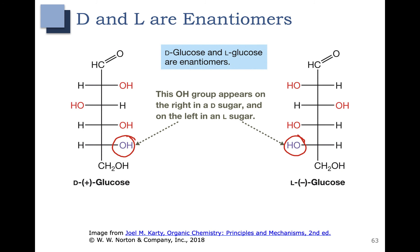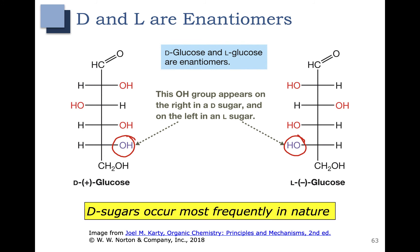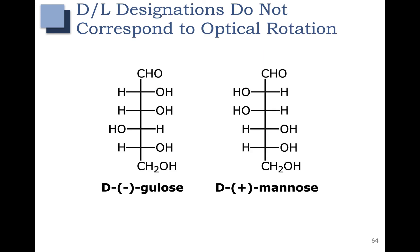Remember that (+) glucose and (−) glucose are enantiomers, so given one you should be able to draw the other. It's also important to remember that D sugars with the OH group on the right are the ones that occur most commonly in nature. Keep in mind that the D and L designations do not correspond to optical rotation. A D sugar can rotate in either the positive or negative direction, and an L sugar can also rotate in either direction. Being D or L has nothing to do with whether it rotates in the positive or negative direction.